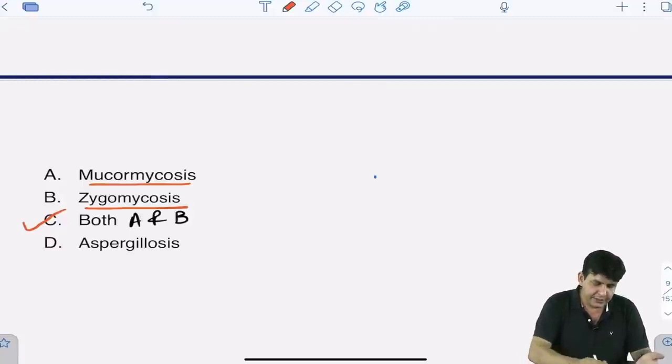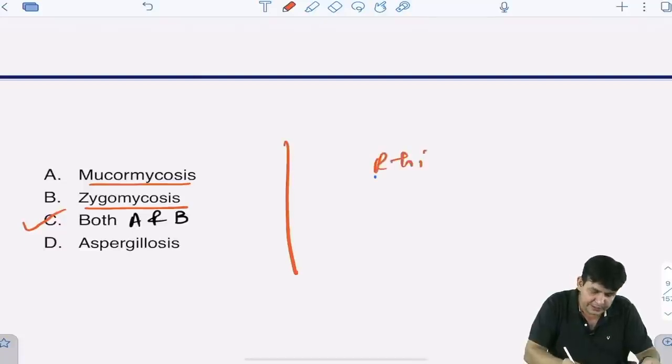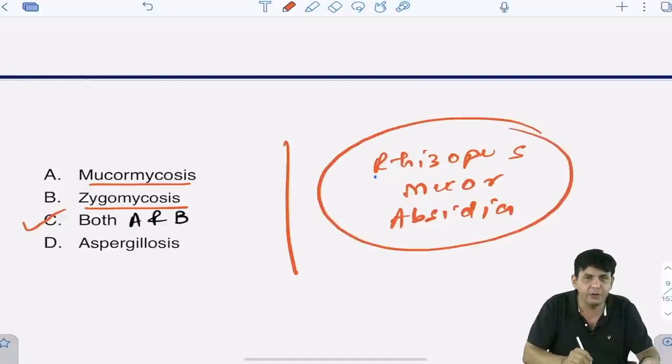Let me tell you something about them because this is a short question in any of the exams—in NEET PG or FMG, definitely there is a question. In the zygomycetes family, you have three fellows: one is Rhizopus, one is Mucor, and one is Absidia. These are the three important ones in this zygomycetes or mucormycetes family.